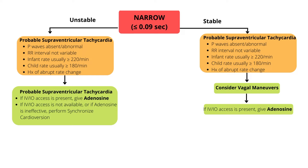Vagal maneuvers help to decrease the heart rate when the vagus nerve is stimulated. In patients with SVT, vagal stimulation may terminate the tachycardia by slowing the conduction through the AV node. The easiest technique to use in both infants and children is to put ice to the face — apply a small plastic bag filled with ice and water to the upper half of the face for about 15 to 20 seconds, and do not occlude the nose and the mouth. Older children who are old enough to follow instructions can perform the Valsalva maneuver by blowing through a narrow straw. It is important to never use ocular pressure as it may produce retinal injury.